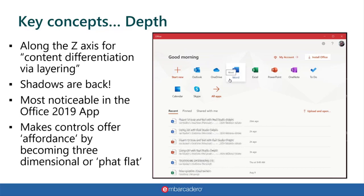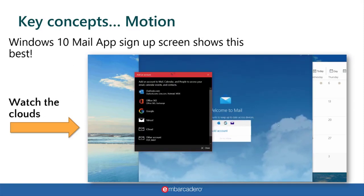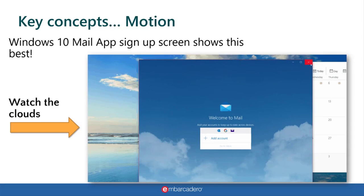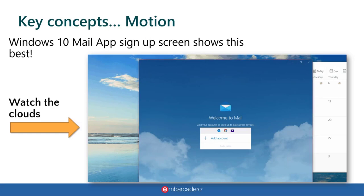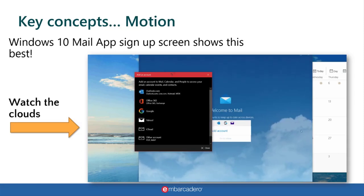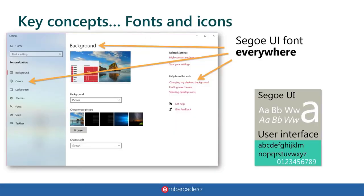I'll show you something with FireMonkey in a second on how to achieve that depth effect. The other key concept is motion, which I'm not really going to show today because it's a little complicated. But in the Mail app's 'add account' experience, you can see that clouds are animated in the background. That is motion — designed to give depth and affordance to the screens. Microsoft is going big for this idea, and you're going to see a lot more of it.